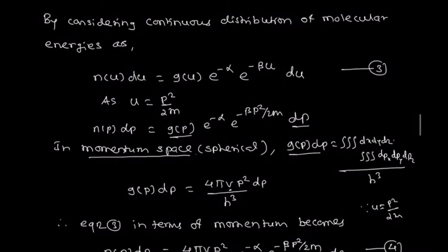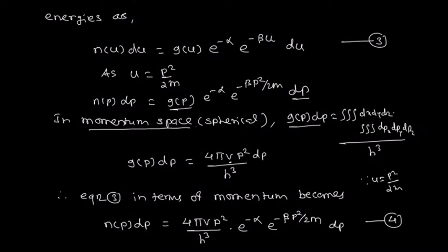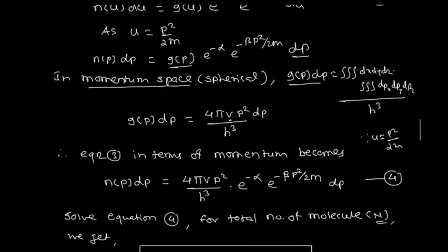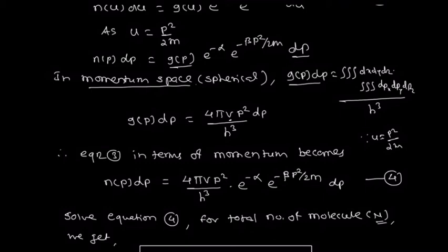Now substituting g(p)dp into the equation, we write n(p)dp in terms of momentum: n(p)dp equals (4π·V·p²/h³) · e^(minus alpha) · e^(minus beta·p²/2m) · dp. We solve this equation by considering the total number of molecules. Integrating from 0 to infinity: integral of n(p)dp gives total N, which equals (4πV/h³) · e^(minus alpha) · integral from 0 to infinity of p²·e^(minus beta·p²/2m) dp. We solve that integration using the standard integral formula.